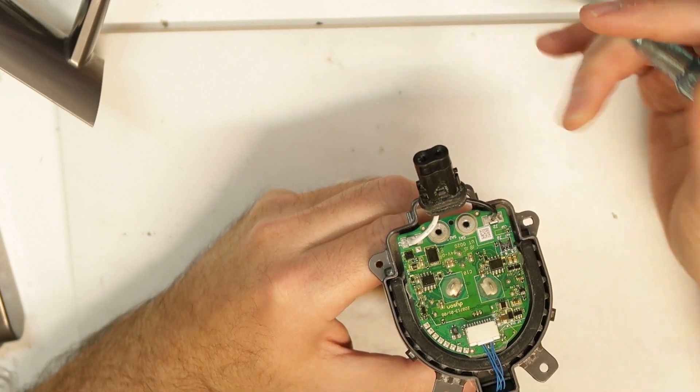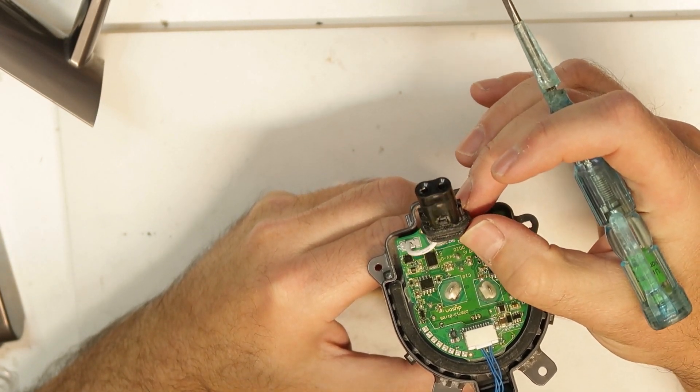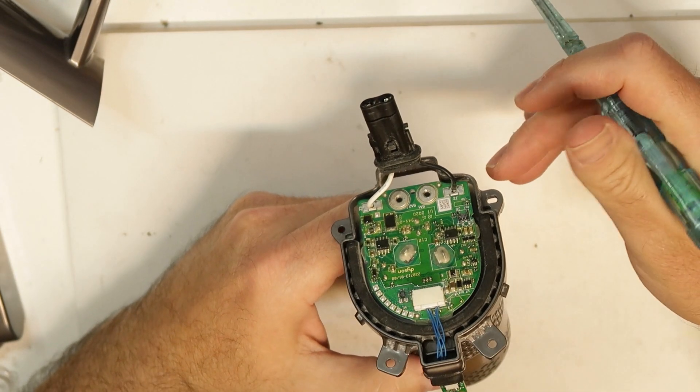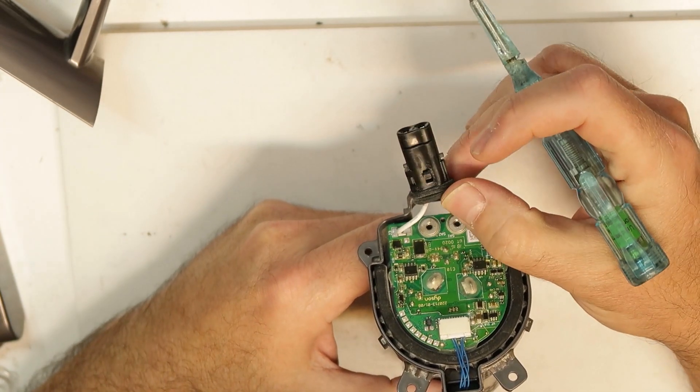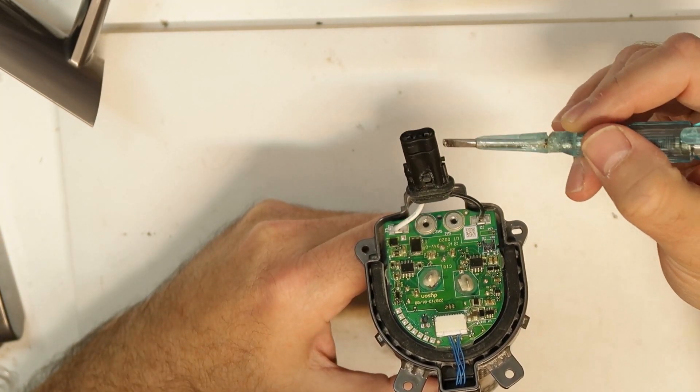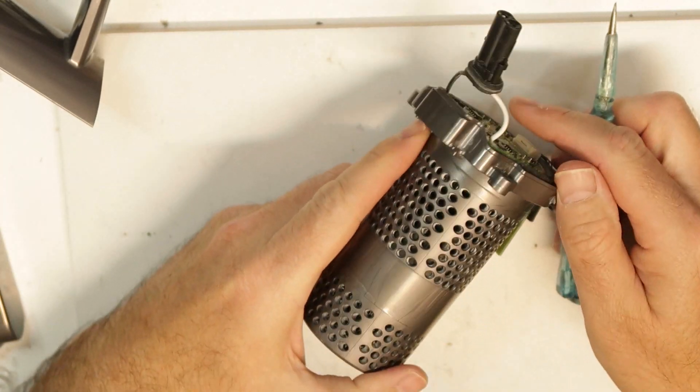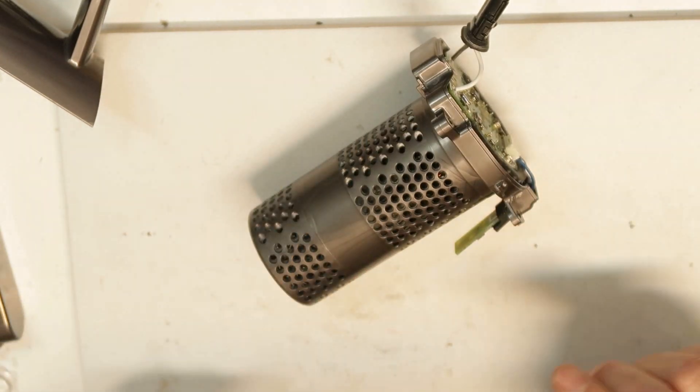The other thing is what is this connector. This connector is also power, it's power out going to the accessories. For example, you have the handle with the motors, the short or the long, and the motor is spinning. So the motor gets its power from this connector.